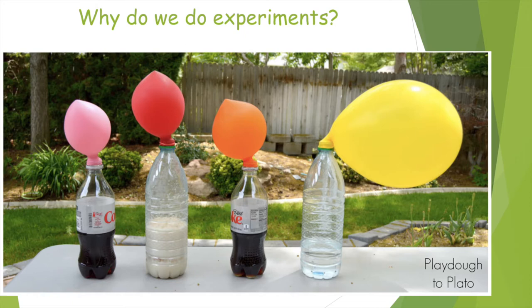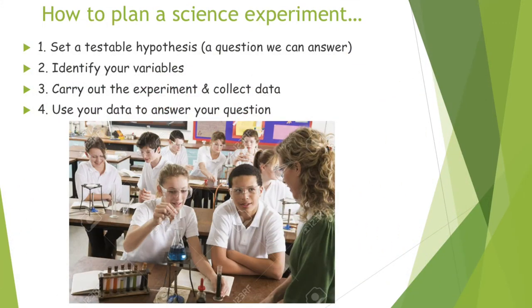The reason experiments are carried out is to test a question and find an answer. For example, the question might be: which solution releases the most gas? That is a question with a testable answer — we can mix solutions, collect gas, and measure the gas volume produced. Here is a breakdown of how to plan and carry out a science experiment: first, set a hypothesis — a question you want to answer. Next, identify variables. Third, carry out the experiment and collect data in a table. Finally, use your data to answer the question, usually by writing a conclusion.